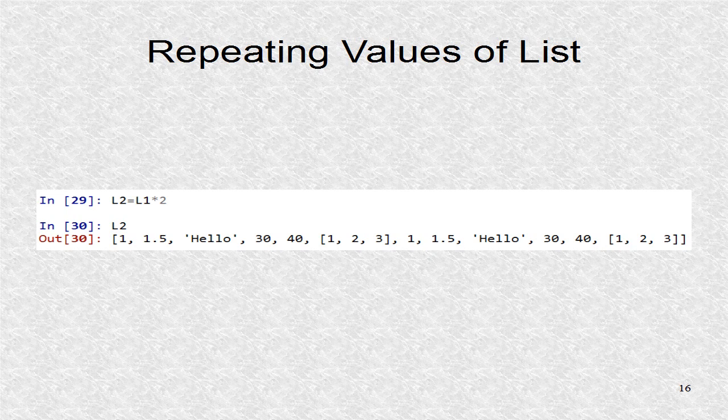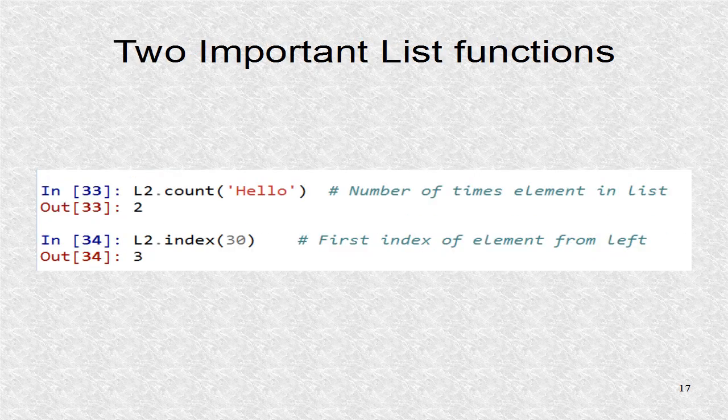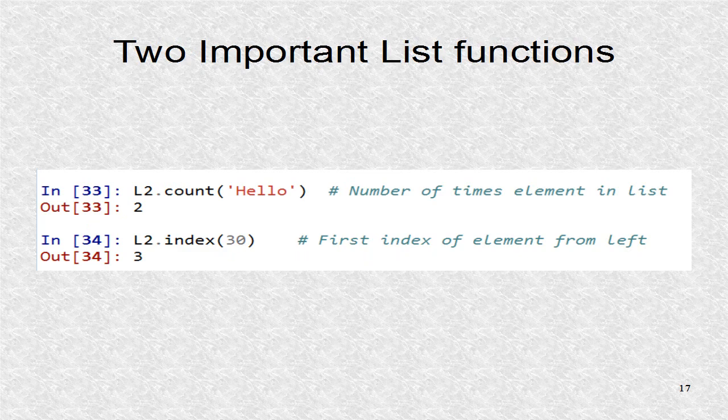The multiply symbol applied to a list refers to repeating a list. Two of the important list functions are count and index. Count returns how many elements are of a particular value, while index returns the first index found for the given value.